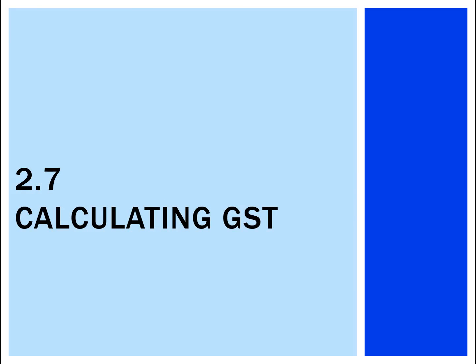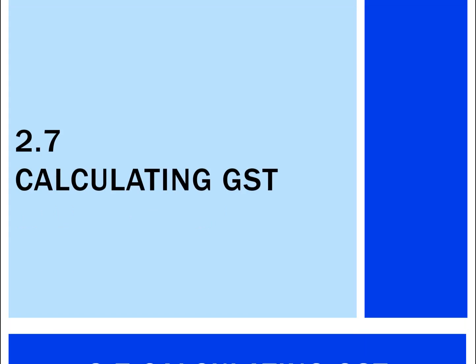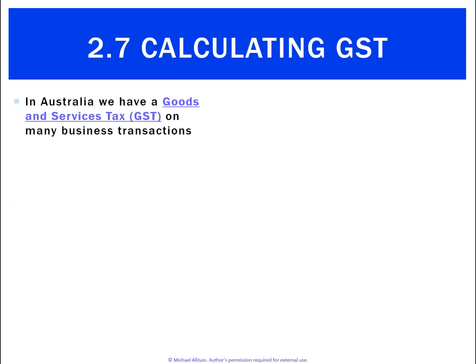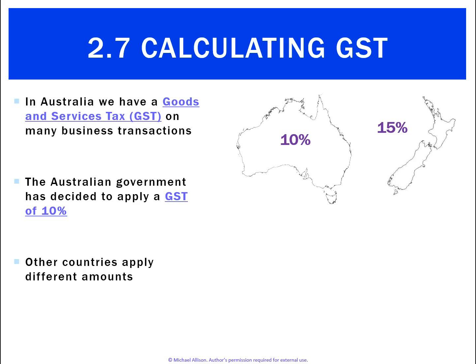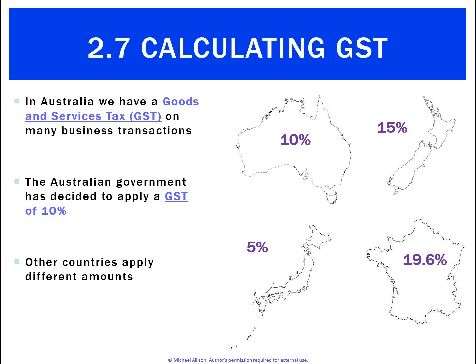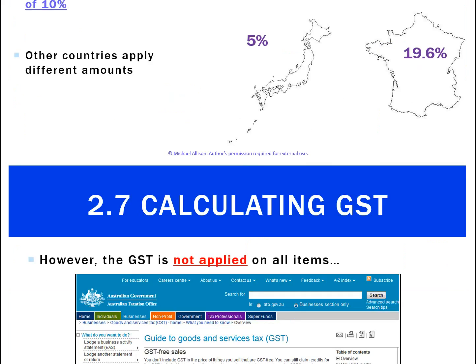Calculating GST is a relatively simple transaction, though it can be quite difficult. First of all, we want to look at the rate that we've been charged, which is 10% — just bear in mind that's just a figure for Australia. In other countries, GST rates are different amounts: 15% in New Zealand, 5% in Japan, and 19.6% in France.